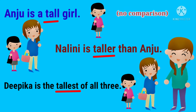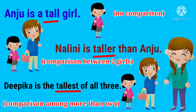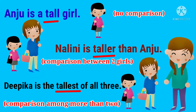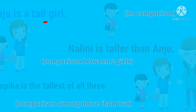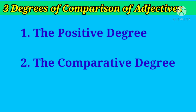The adjective 'tall' is used to show no comparison — we are talking about only one girl, Anju. The word 'taller' is used to show comparison between two girls, Nalini and Anju. The word 'tallest' is used to show comparison among more than two girls. These three forms — tall, taller, tallest — are the degrees of comparison of adjectives: 'tall' is the positive degree, 'taller' is the comparative degree, and 'tallest' is the superlative degree.